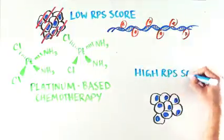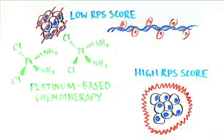However, these platinum-based chemotherapies don't actually kill cancer cells with high RPS scores.